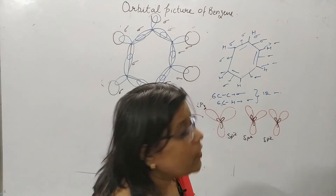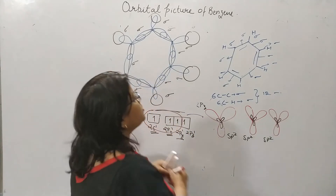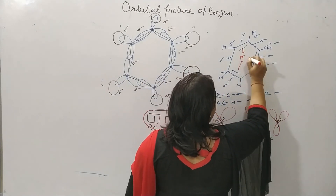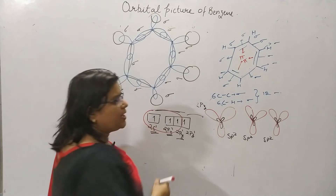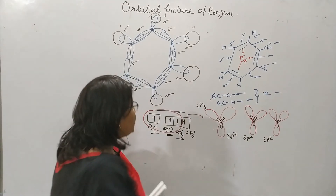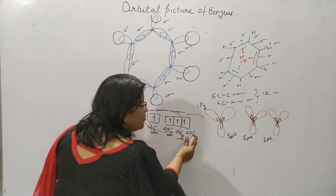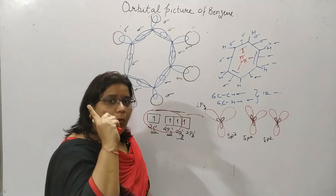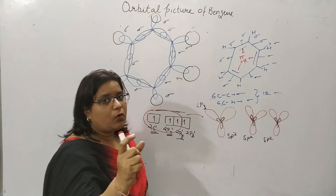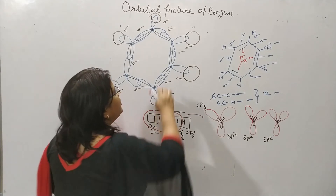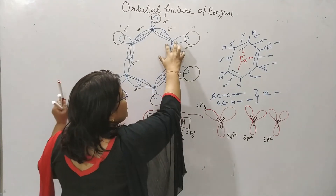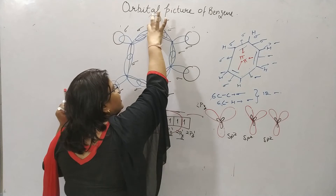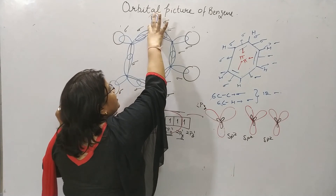In addition, there are also 3 pi bonds present. The remaining 2pz orbital of each carbon has one electron. This 2pz orbital of each carbon overlaps with the neighboring carbon's 2pz orbital.